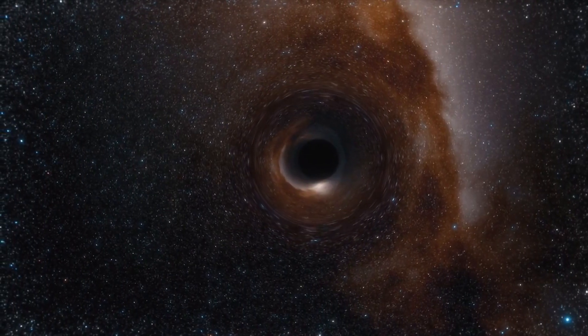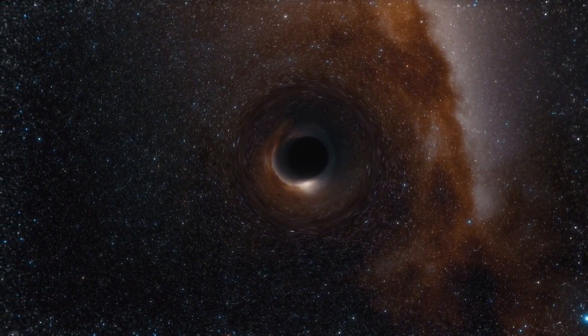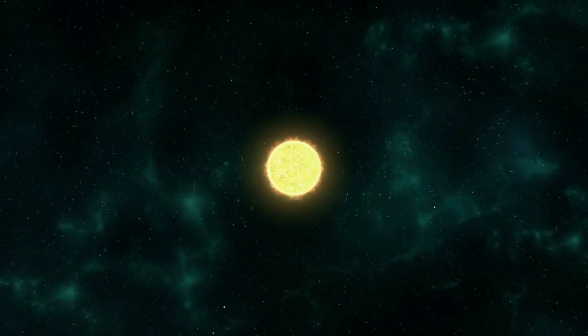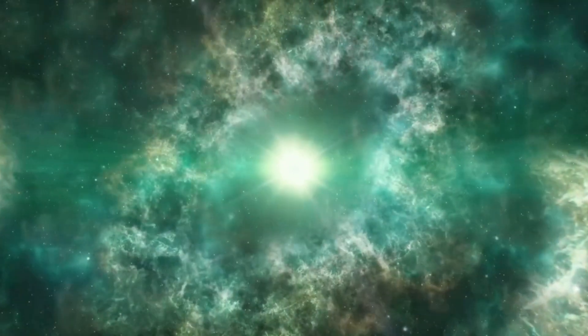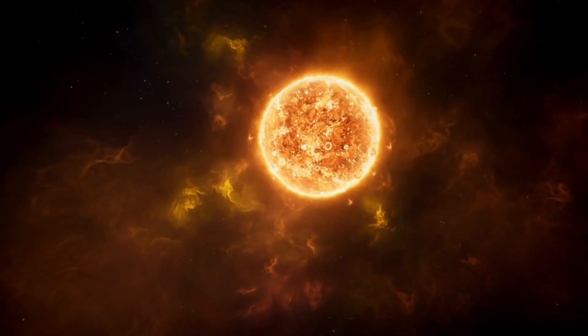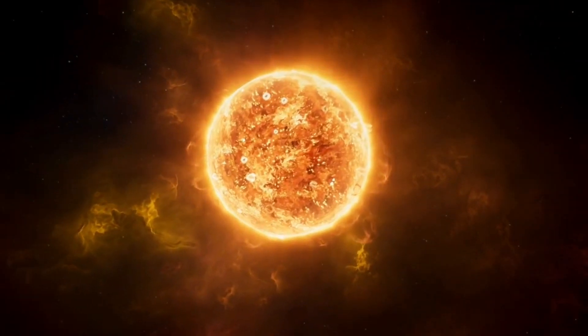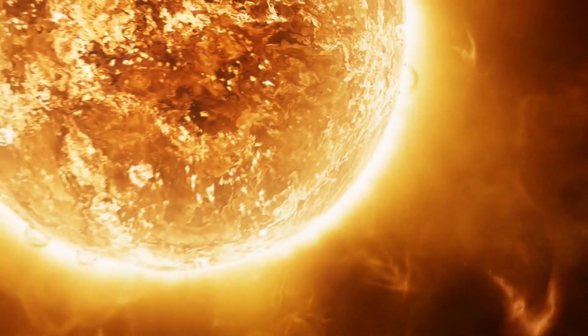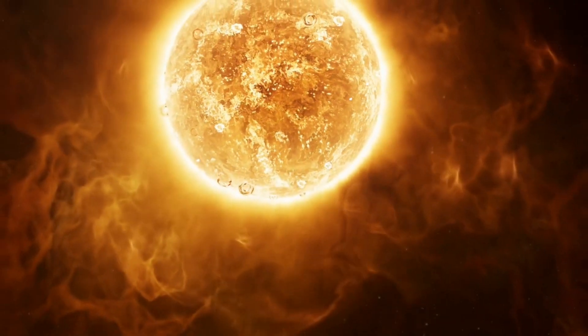The unique thing about Betelgeuse is that we can actually see its surface, which isn't the case for most other stars. This gives us an incredible opportunity to learn about how big stars like Betelgeuse behave as they get older, including these kinds of surprising mass ejection events. Recently, astronomers made a bone-chilling discovery. For the first time ever, they observed a star eat its own planet 12,000 light-years away in the constellation Aquila.